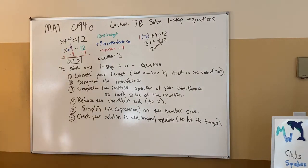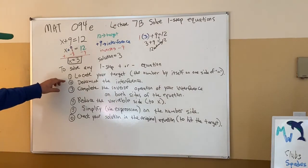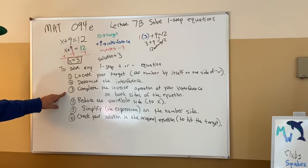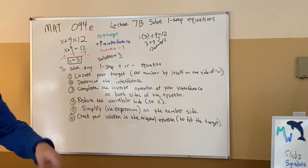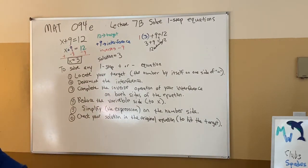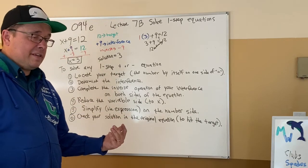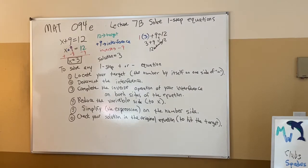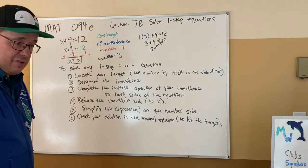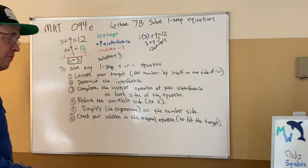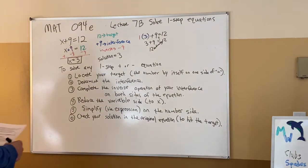This process we've established is going to be the key to getting all of them. After we determine the interference, one of the biggest steps is deciding: what's the way to get rid of plus 9? With minus 9. How do I get rid of minus 7? With plus 7. How do I get rid of multiplying by 12? Divide by 12. And how do I get rid of dividing by 6? Multiply by 6.